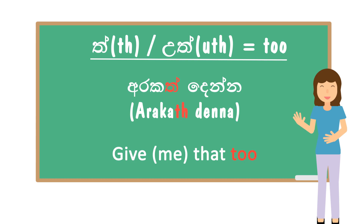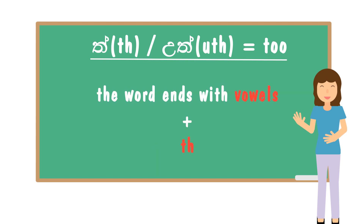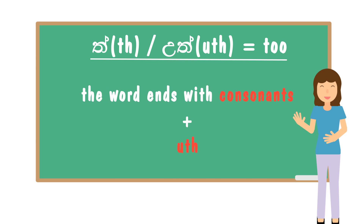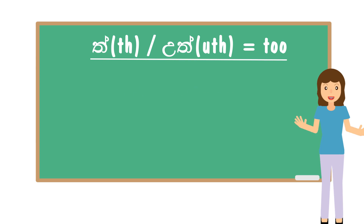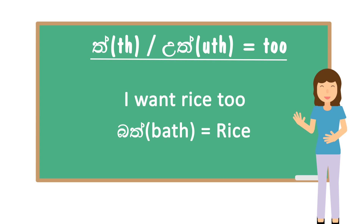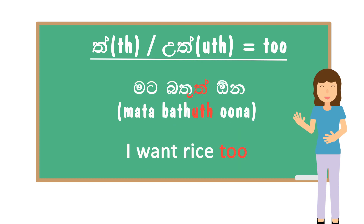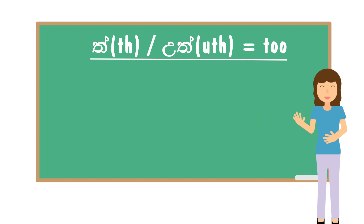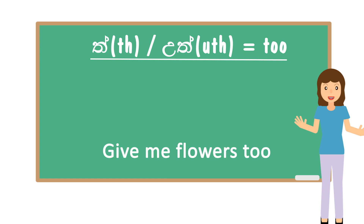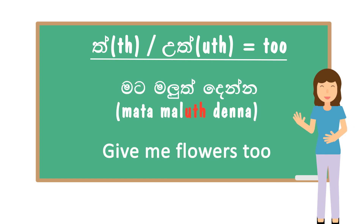But remember, you have to add UTH if the word ends with a consonant. How do you say 'I want rice too'? The word for rice is BAT — it ends with a consonant. So you have to add UTH and say BATUTH: 'MATH BATUTH ONA' means 'I want rice too.' Same with the word MAL, which means flowers. How do you say 'give me flowers too'? 'MATH MALUTH DENNA,' or simply 'MALUTH DENNA.'